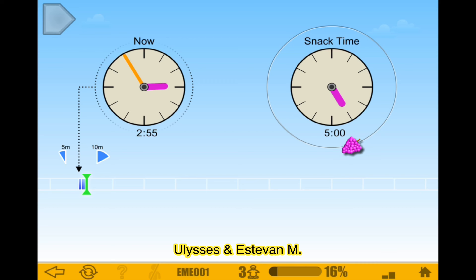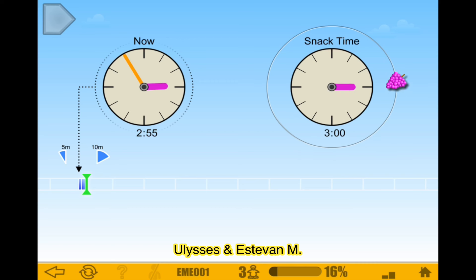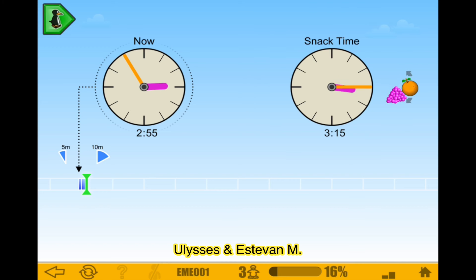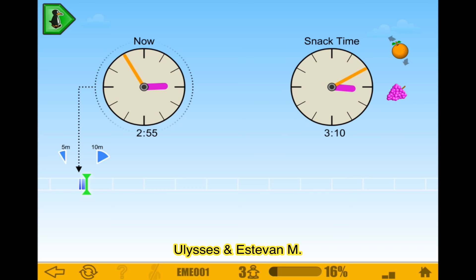2:55, and then we have 2:55 — it would be 3 o'clock. So let's just get 3. And then you have to add 10 minutes, which would be 3:10. There we go.